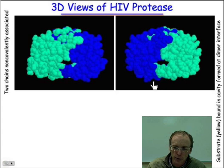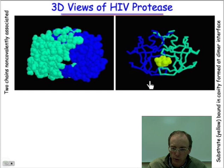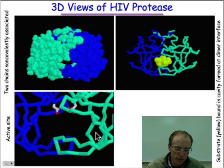Let's take a look at how the substrate binds and where those aspartyl groups are. Here's a space-filling model where you can see the substrate in yellow, and now a wireframe model. As we zoom in, we'll be able to see where those aspartyl groups are. And we can see that there are the two aspartyl groups, basically dangling right into the carbonyl group of where the substrate is going to occupy.